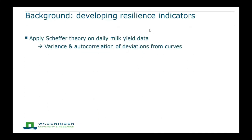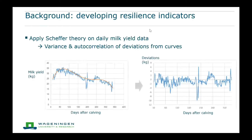We applied this theory to daily milk yield data in cattle, because milk yield is sensitive to disturbances and is now available on many farms thanks to automatic milking systems. We calculated variance and autocorrelation of the daily milk yield data, but first corrected the raw data for the milk yield curve, because the shape of the curve can also affect variance and autocorrelation — and we're only interested in the short-term fluctuations. By fitting a curve through the lactation and taking the residuals, we get what we calculated variance and autocorrelation on.